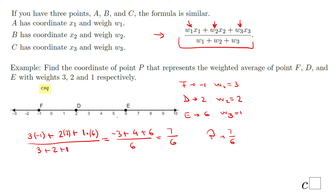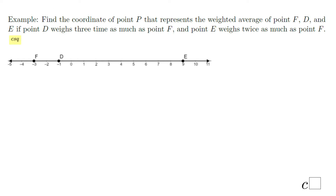Which is kind of 1 and something, somewhere right here — that will be point P. You notice it's closer to point F, and F has a weight of 3. Yeah, that makes sense. So let's move to the next thing.